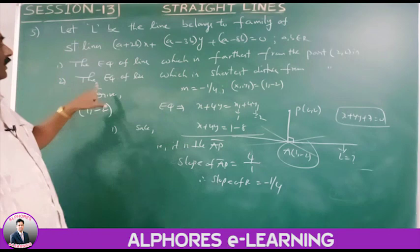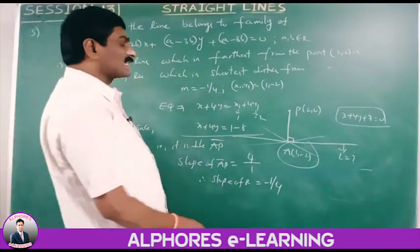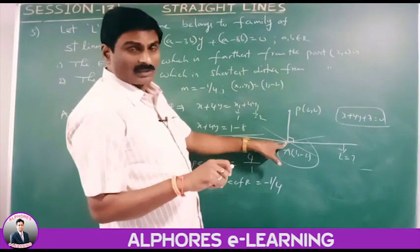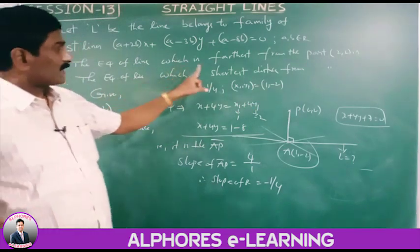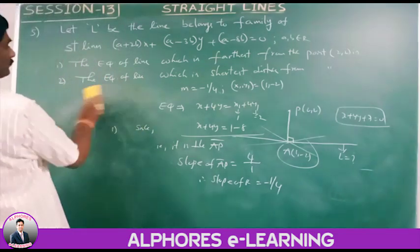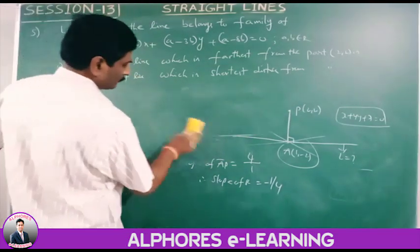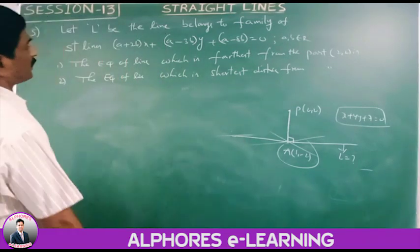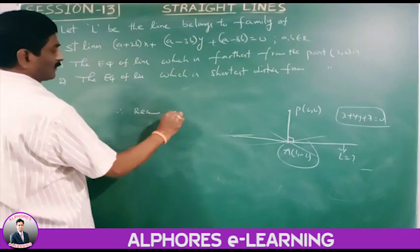Sub-problem 2: the equation of the line with the shortest distance from P(2,2). The shortest distance is zero — meaning the line passes through P itself. Therefore, the required line is the line AP passing through both A(1, minus 2) and P(2, 2).